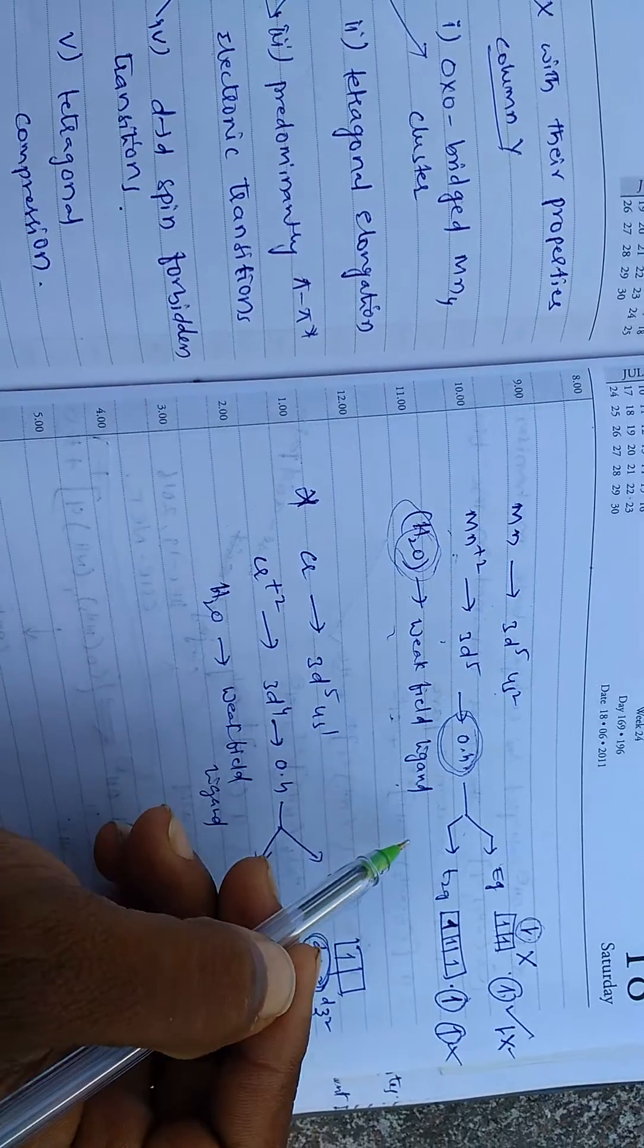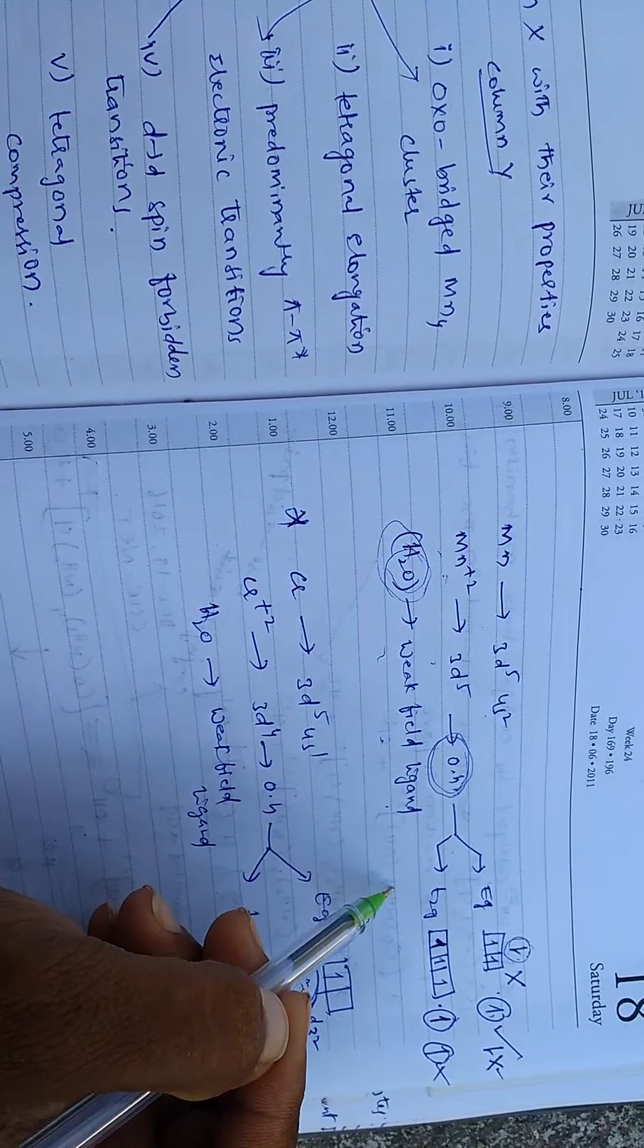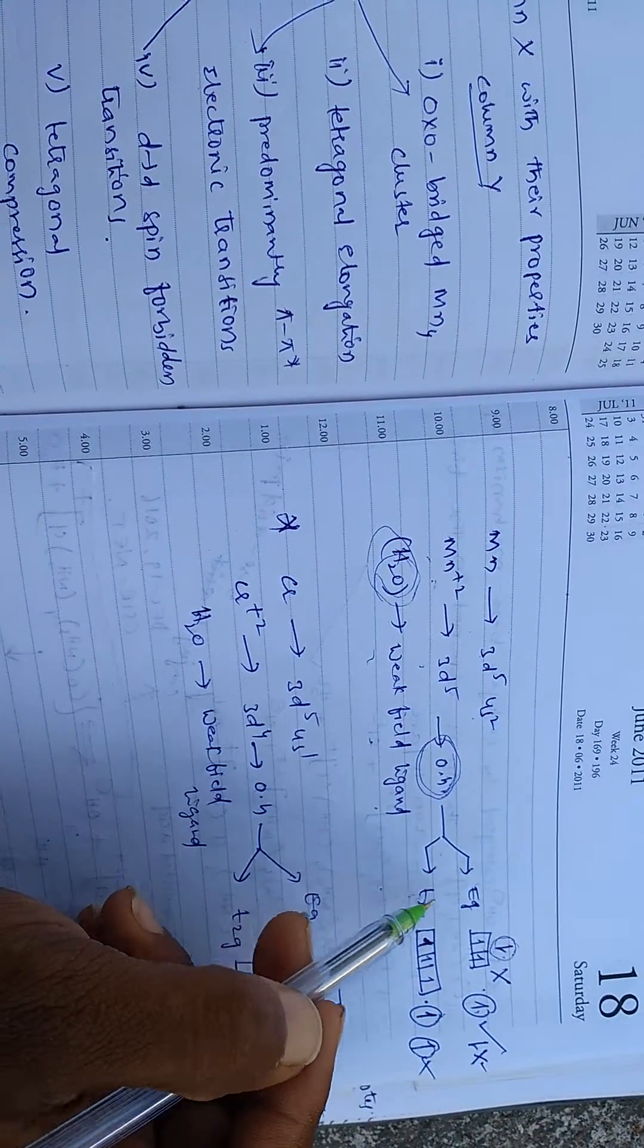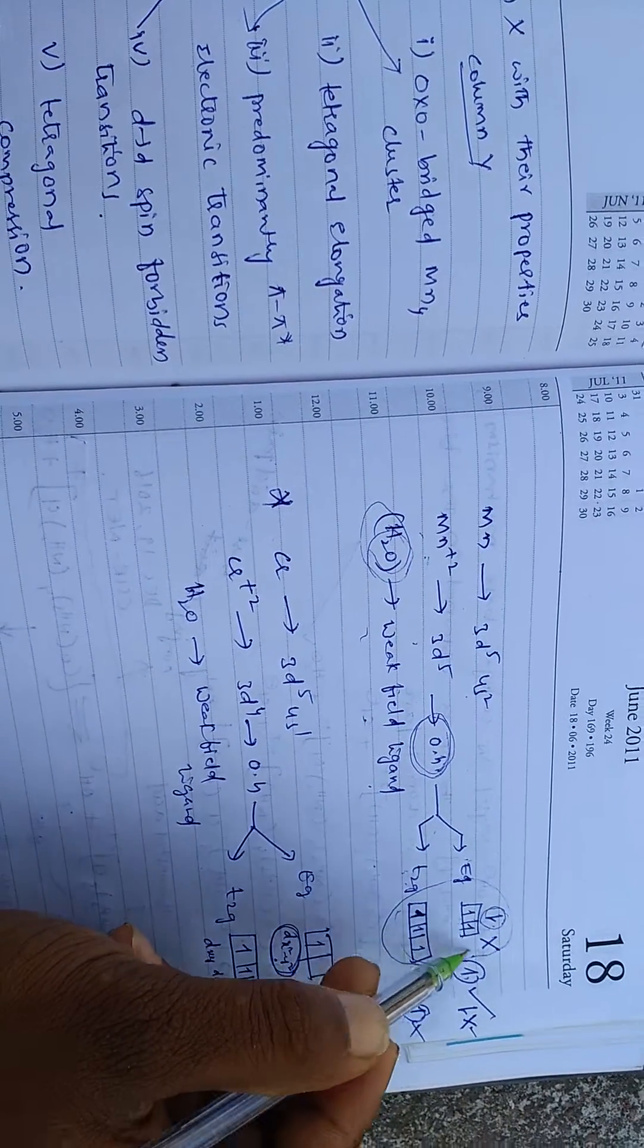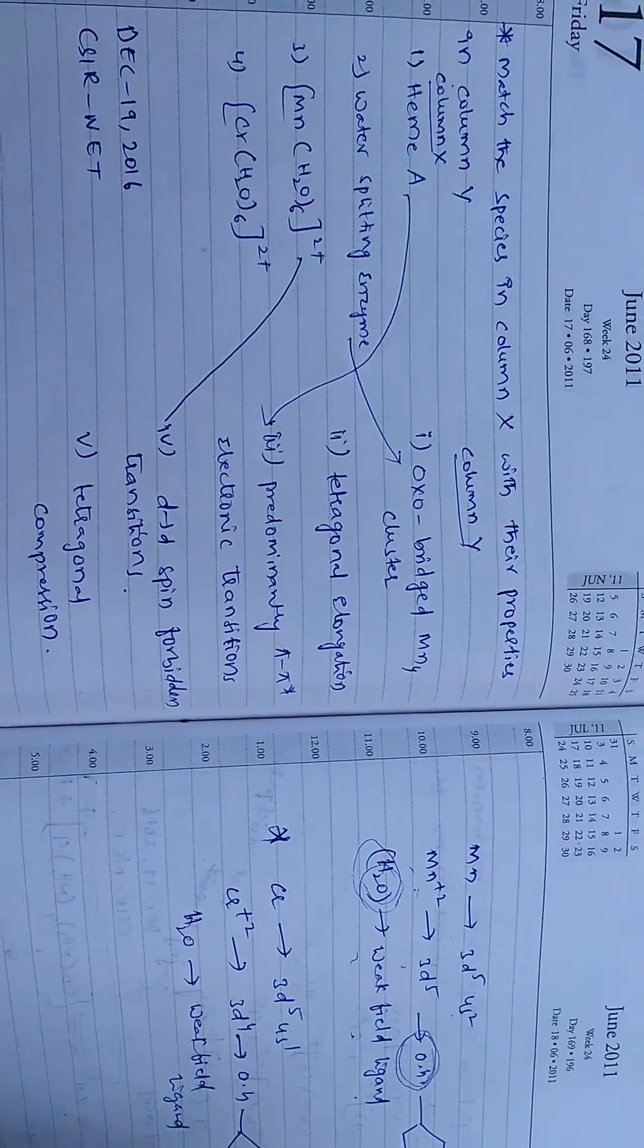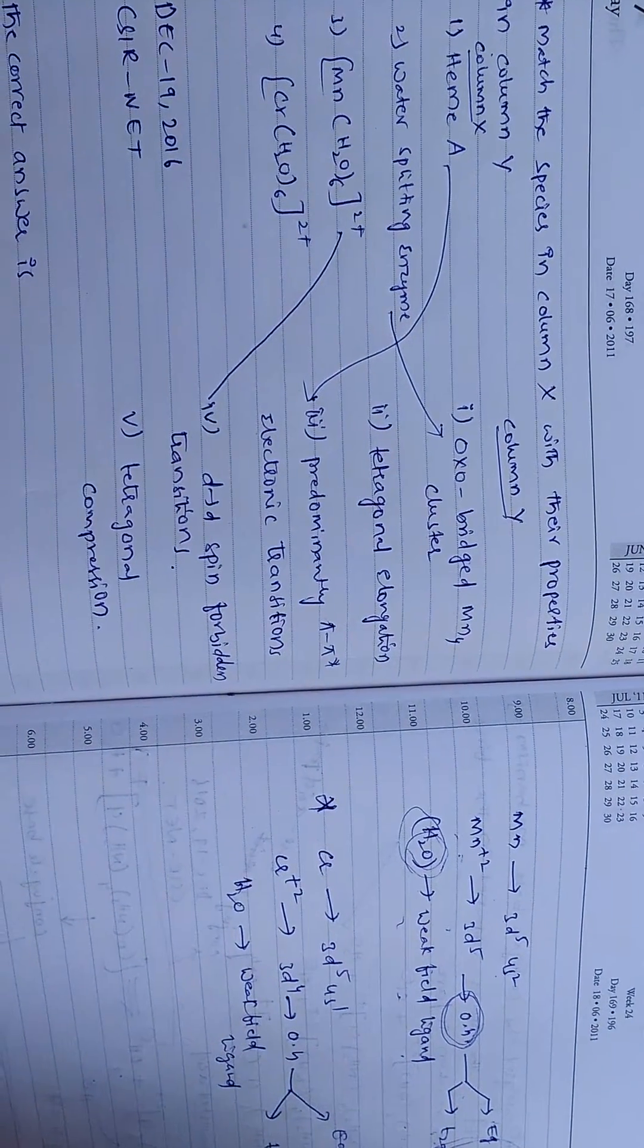Hence, its spin is high, meaning it has high spin. When it splits into T2G and EG orbitals, the electrons are arranged like this. So, what is d-d spin forbidden transition?